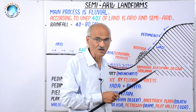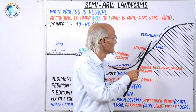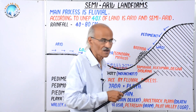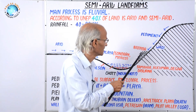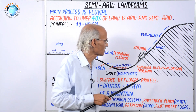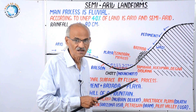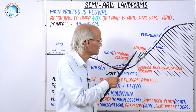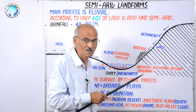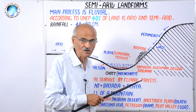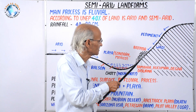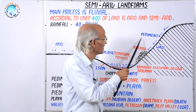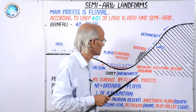Pediment is an erosional surface formed by fluvial process. The material rolling down becomes rounded in shape and takes the form of bajada — large-size pebbles and cobbles deposited not on steeper slopes but at the foothill of the mountain where the slope becomes gentle. So the sequence of three landforms is: first pediment, second bajada, and third playa.